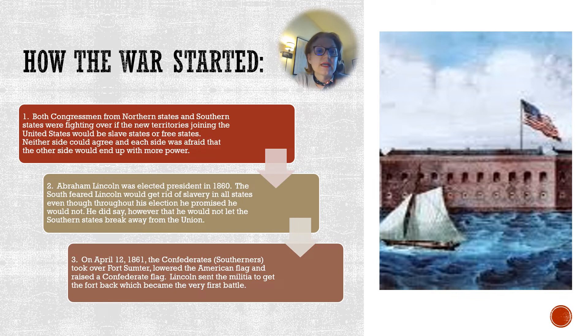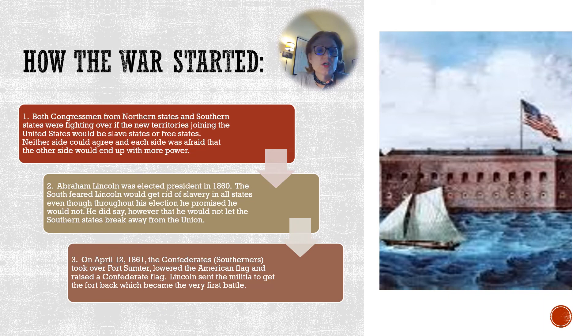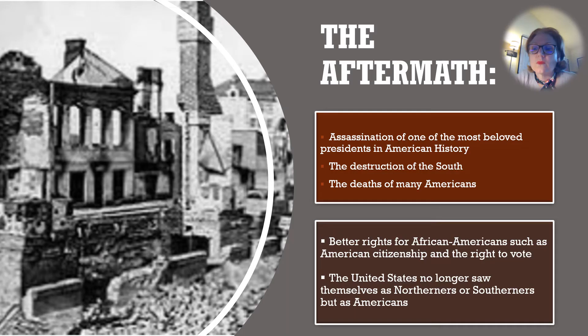The south feared Lincoln would get rid of slavery in all states, even though throughout his election he promised he would not. He did say, however, that he would not let the southern states break away from the Union — that was called secession. Lincoln made a promise that the southern states would not be allowed to secede. Finally, on April 12, 1861, the Confederates, also known as the Southerners, took over Fort Sumter. They lowered the American flag and raised a Confederate flag. Lincoln had to send the militia to get the fort back, which became the very first battle in the Civil War.